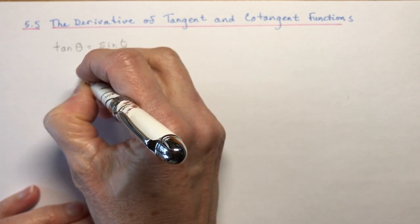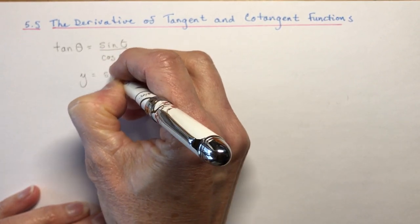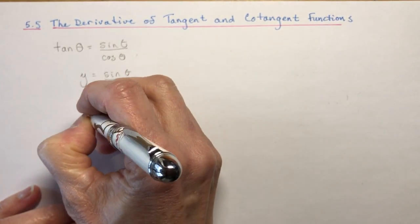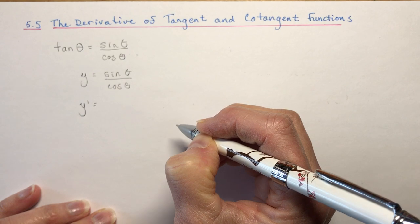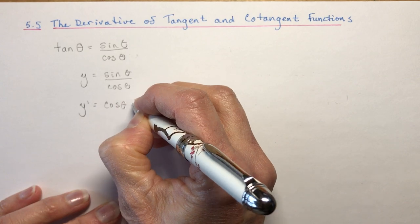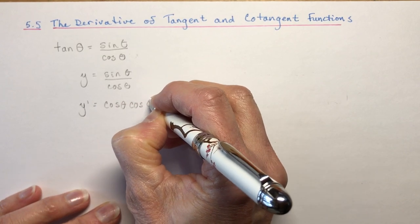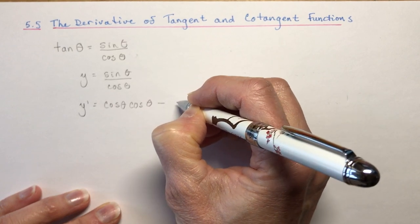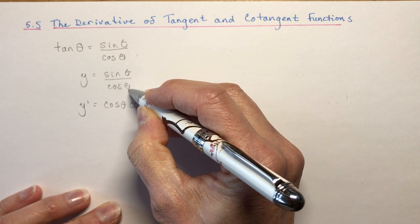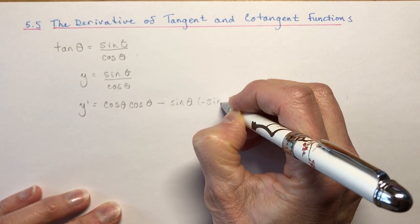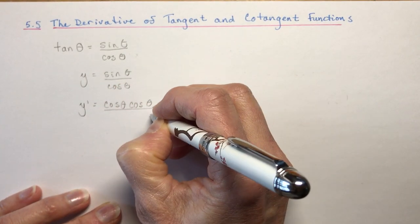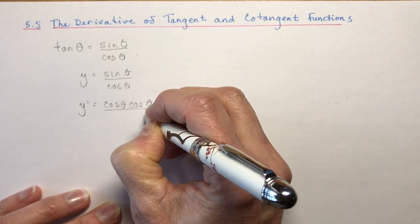Let y equal sin θ over cos θ, which is of course tan θ. Now we take the derivative using the quotient rule: ho d-high gives cos θ times cos θ, minus high times d-ho, where the derivative of cos θ is negative sin θ, all over cos squared θ.